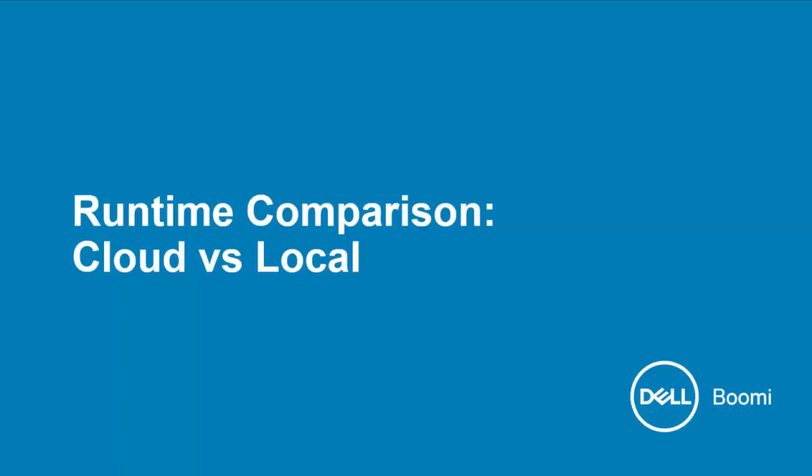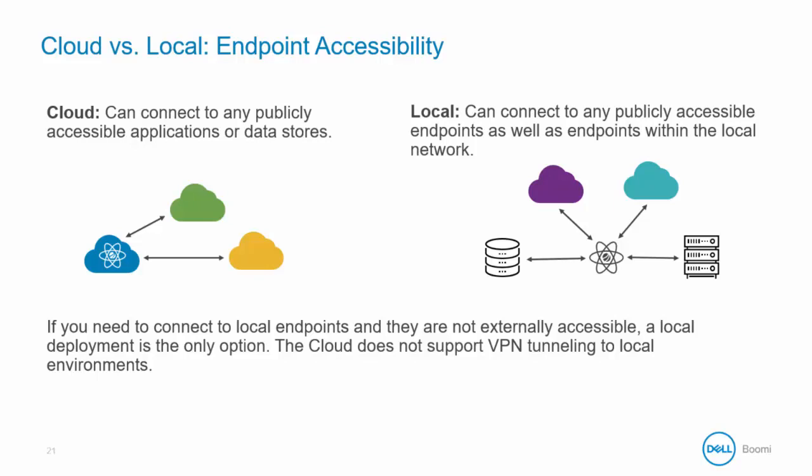In the side-by-side comparison, one big difference is accessibility. In the cloud, you can connect to any publicly accessible application or data store. With a local deployment, you can connect to any publicly accessible endpoint as well as endpoints within the local network. So if you need to connect to local endpoints that are not externally accessible, a local deployment is the only option. The cloud does not support VPN tunneling into your local environment.